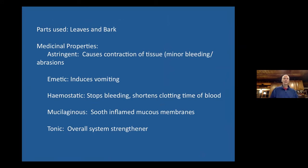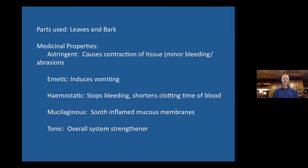The parts used in alder are the leaves and the bark and their associated medicinal properties. One of the major properties is that they function as an astringent, causing tissue contraction and essentially some vasoconstriction, which is very helpful in minor bleeding and abrasions. The bark in particular is useful as an emetic — it can induce vomiting if necessary. It's also hemostatic, which means it stops bleeding or shortens clotting time, helpful in wound cases. It's also mucilaginous, functioning to soothe inflamed mucous membranes, and overall it's a tonic that can strengthen the entire system — that being primarily the leaf portion, while the bark tends to be more astringent with emetic properties.